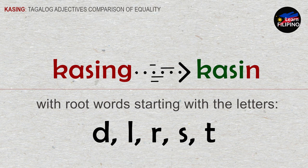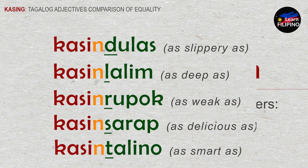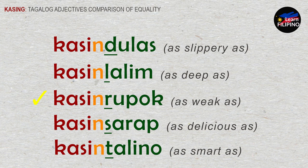Kasin. Here are some examples: 'kasindulas' — as slippery as; 'kasinlalim' — as deep as; 'kasinrupok' — as weak as (in terms of material); 'kasinsarap' — as delicious as; 'kasintalino' — as smart as.